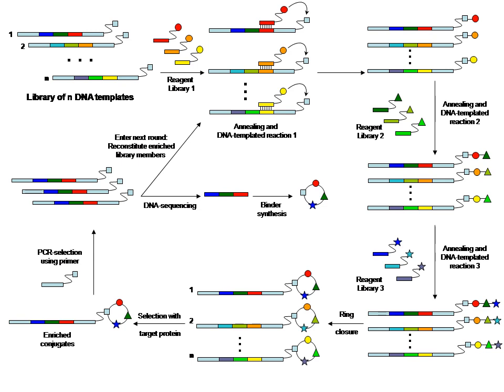Encoded self-assembling chemical libraries rely on the principle that two sublibraries of a size of X members containing a constant complementary hybridization domain can yield a combinatorial DNA duplex library after hybridization with a complexity of X² uniformly represented library members. Each sub-library member would consist of an oligonucleotide containing a variable coding region flanked by a constant DNA sequence, carrying a suitable chemical modification at the oligonucleotide extremity.